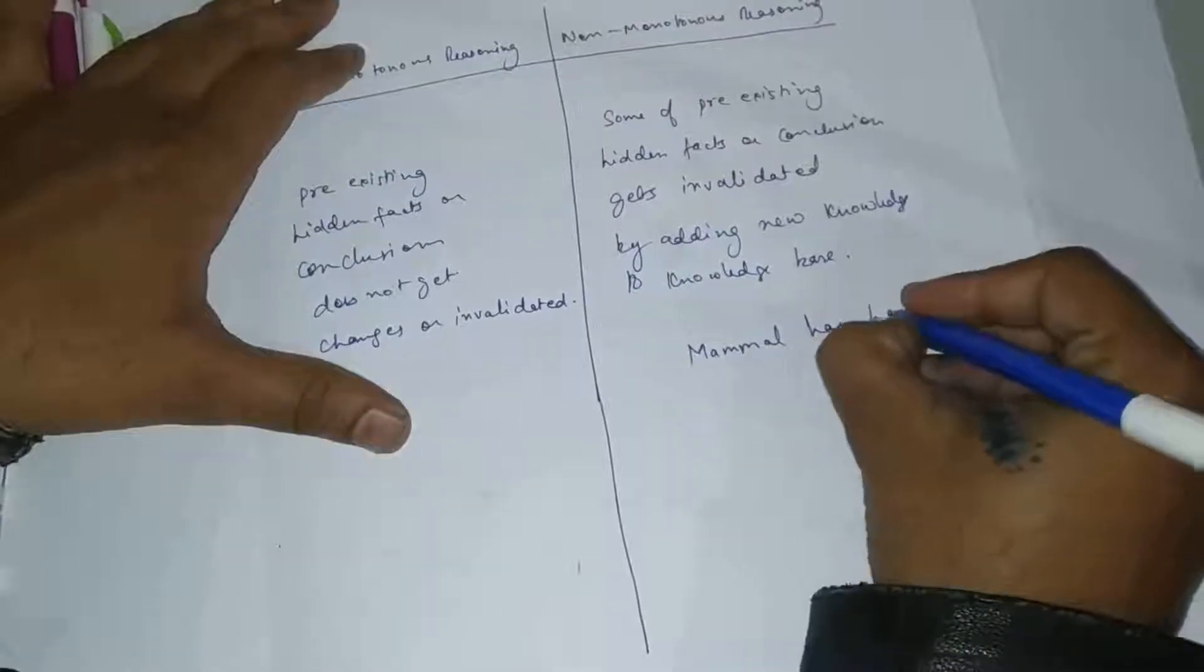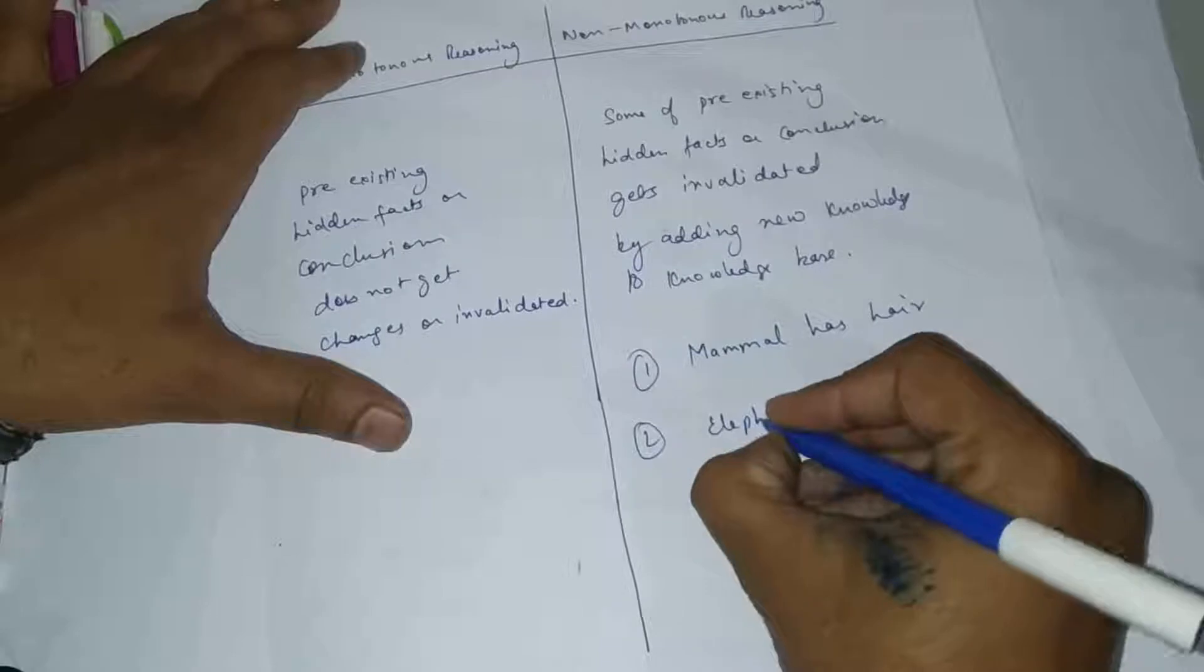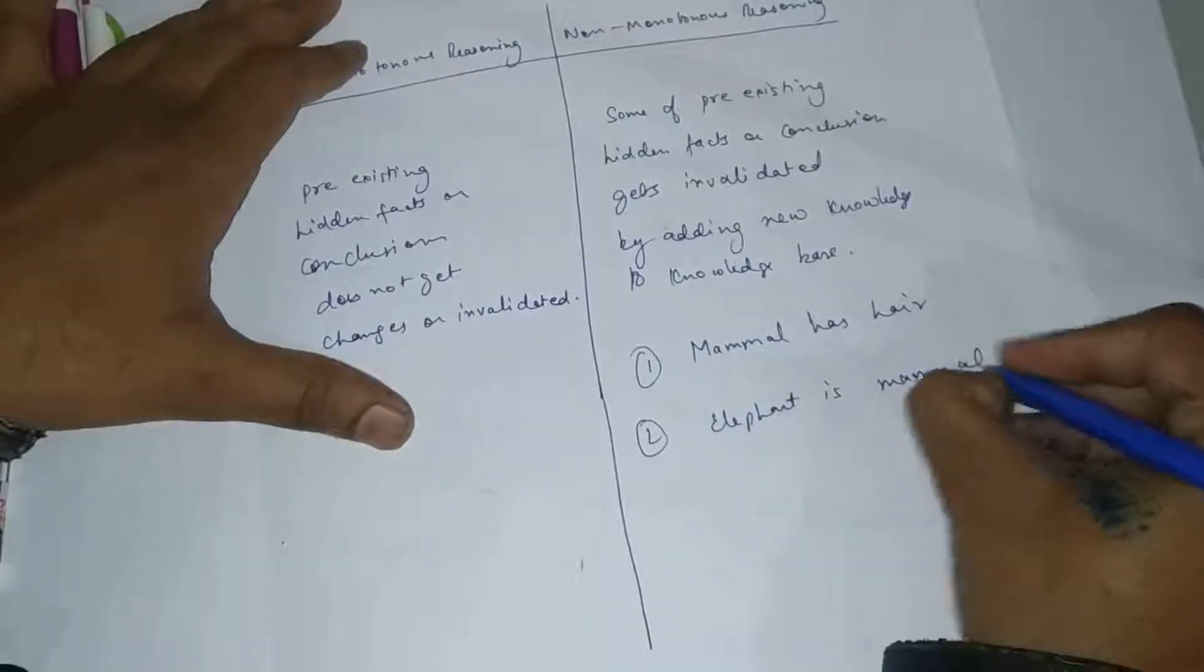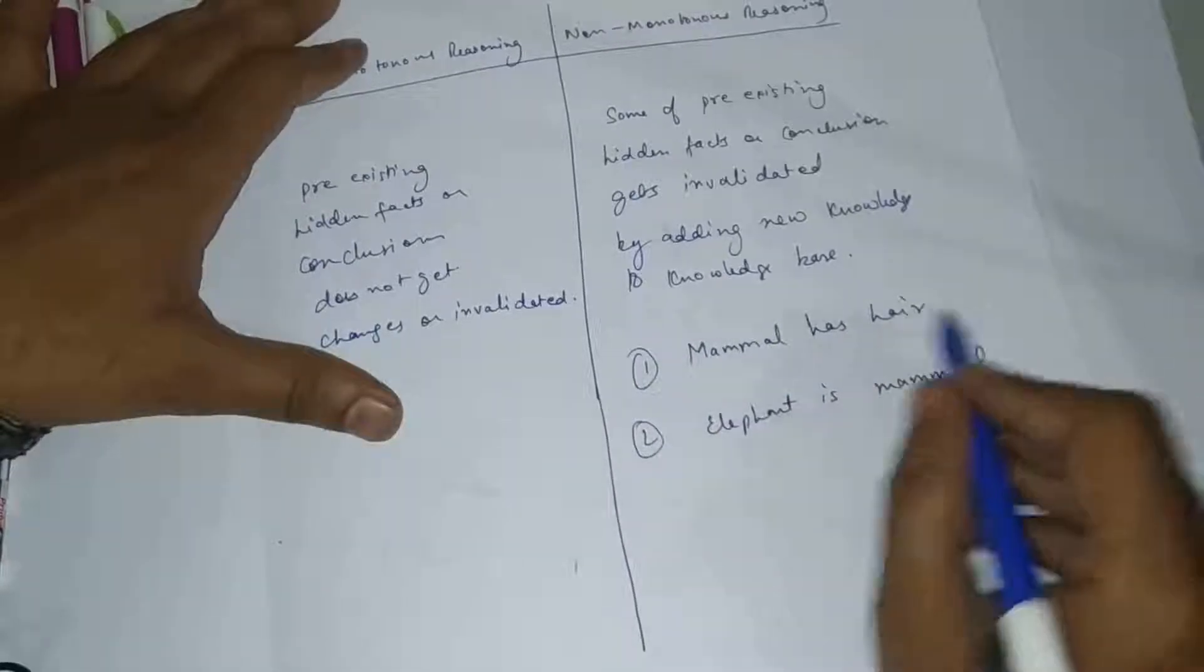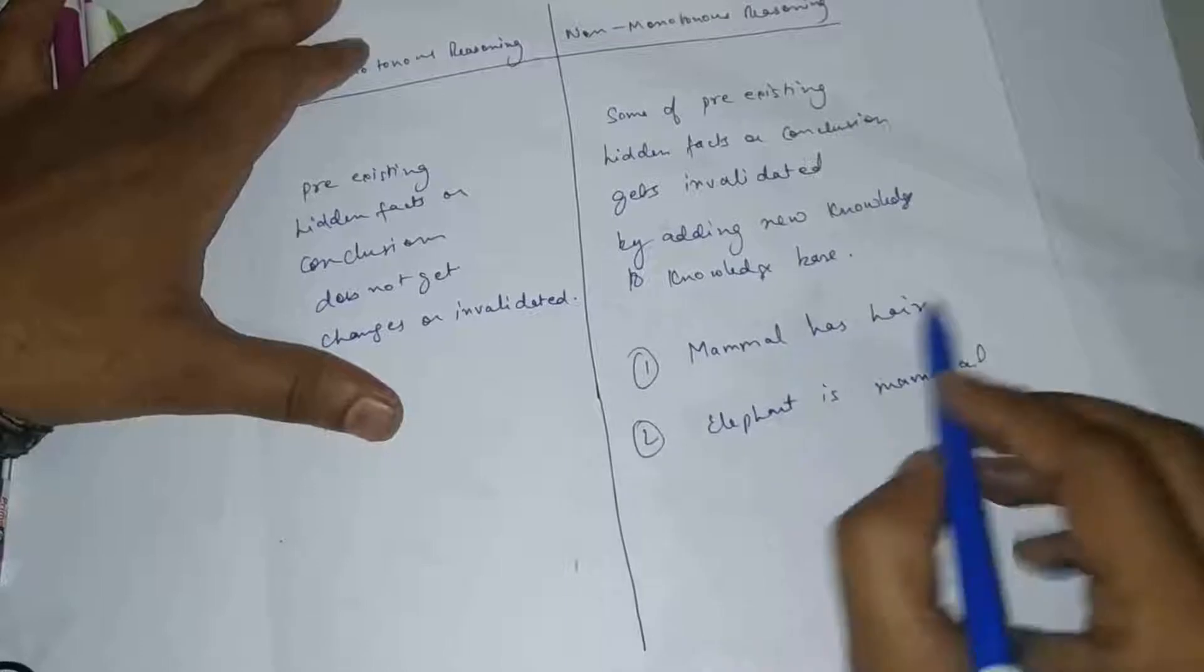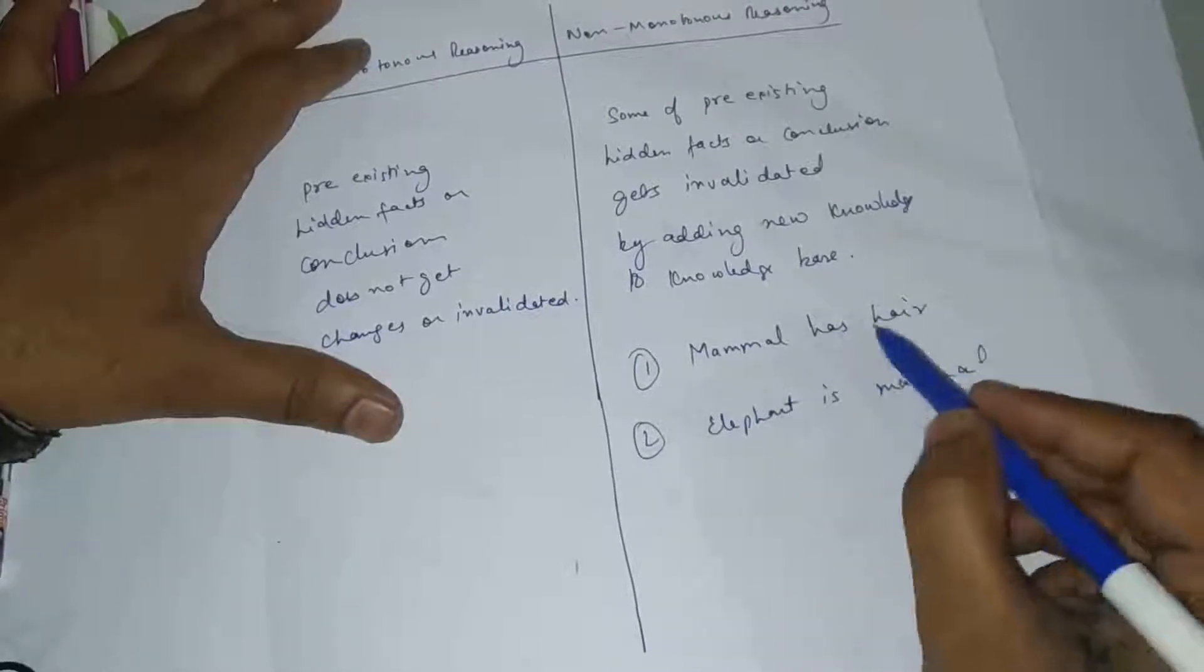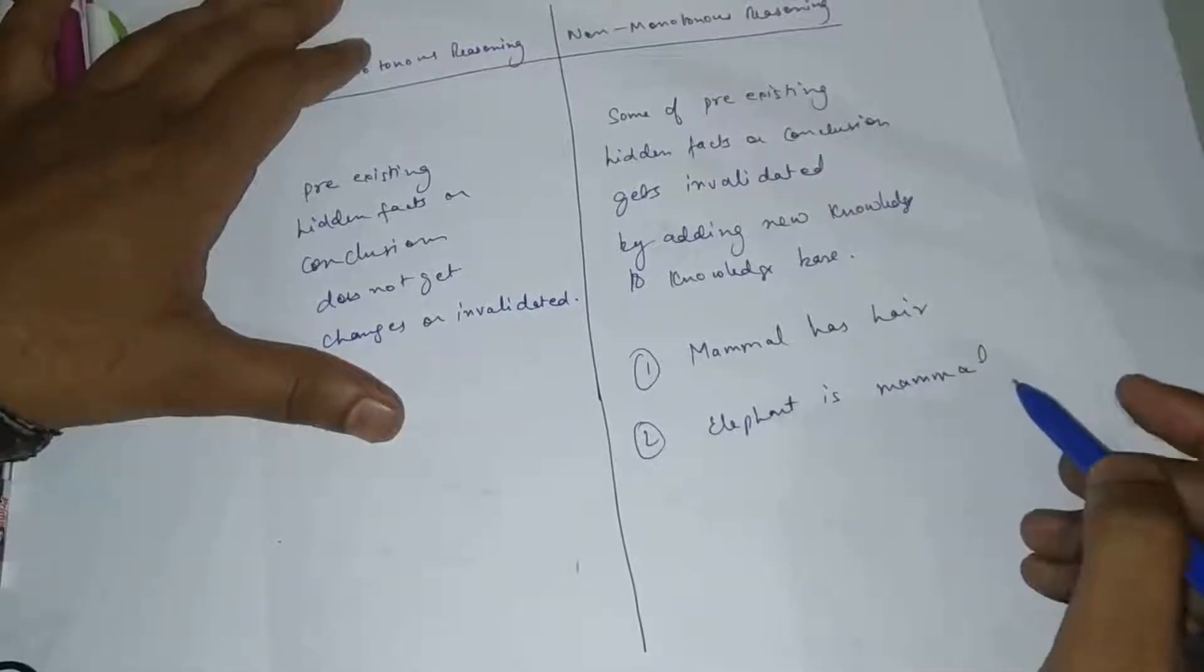Mammal has hair. Elephant is mammal. These are two universal facts which are normal in my knowledge base. My first fact is that mammal has hair. The second fact is that elephant is a mammal.